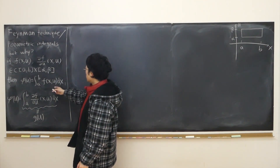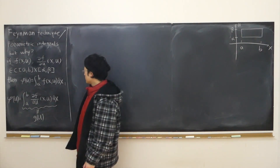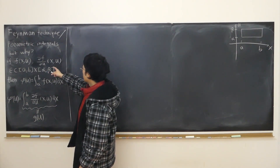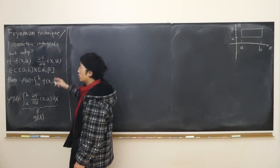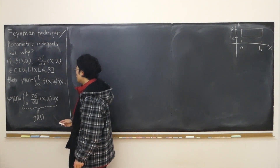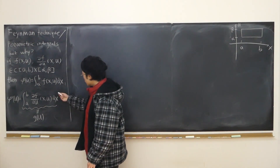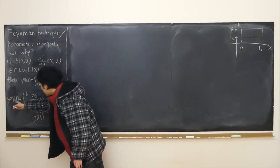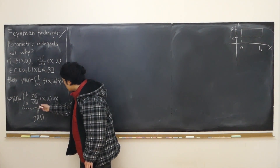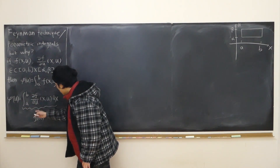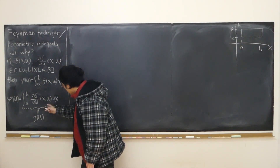For example, we're given a definite integral from a to b of f(x, u) — a two-variable function — dx, denoted as φ(u), a function of u. There is a sufficient condition: if f(x, u) and ∂f/∂u(x, u) are both continuous over the rectangle [a,b] × [α,β], then we can switch the order — meaning we can first integrate, then differentiate.